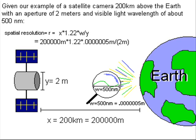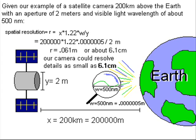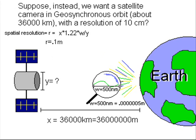For our example of a satellite camera 200 kilometers above the Earth with an aperture of 2 meters and visible light wavelength of about 500 nanometers, we can just plug in the values of our variables into our equation. And we get an answer of about 6.1 centimeters. This is from 200 kilometers with visible light with 2 meters aperture.